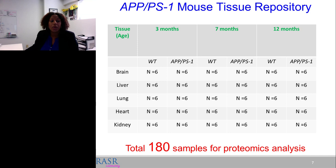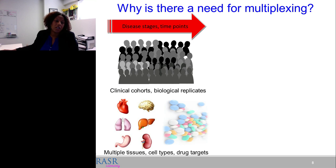We began thinking about multiplexing approaches. This applies not just to our tissue study, but to any large clinical cohort with hundreds or thousands of patients, multiple disease stages or time points, different cell types, or drug target studies. High-throughput approaches are critical because shotgun bottom-up proteomics can be quite costly.